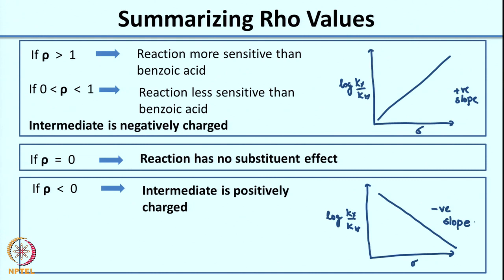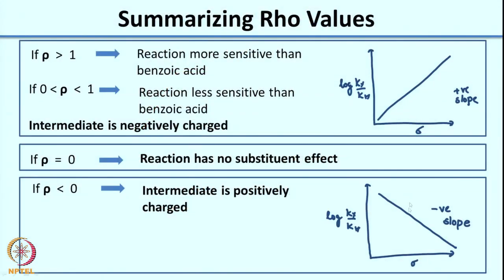To study a reaction experimentally, you vary the substituents on the aromatic ring and make a Hammett plot. Based on the slope — both its magnitude and sign — you can get information about the reaction intermediate.